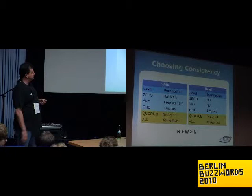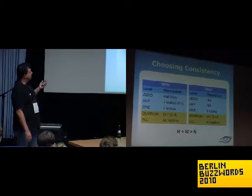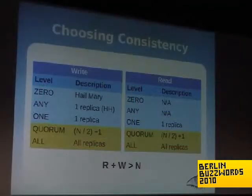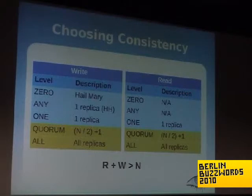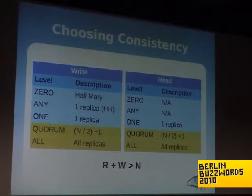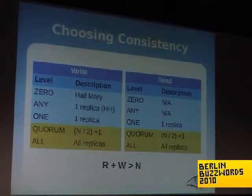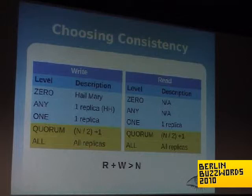The feature that provides such high availability is eventual consistency. The way it works is you're given consistency levels to choose from on both reads and writes — the client determines this. There are five different choices, only three of which apply to reads, but they all boil down to how many copies you're going to block on before you consider that a successful operation. The rule of thumb is that as long as the number you're blocking on for a write plus the number for a read is greater than the total number of replicas, you have consistency.